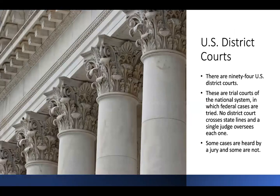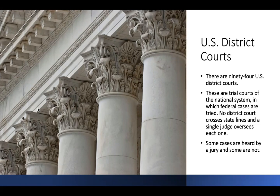There are 94 U.S. District Courts — these are the trial courts of the federal system. No district court crosses state lines, and a single judge oversees each one. In California, there's the northern, central, and southern district of California, and it is geographic. Some cases are heard by a jury and some are not. We are in the Central District of California, which encompasses Orange County, Riverside, and Los Angeles. In the federal system, your case could be heard in any of those three within the district.